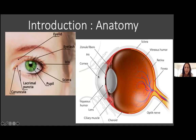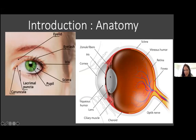Moving posteriorly, we've got the anterior chamber — a space filled with aqueous humor. Behind that we have the pigmented part, the iris, which controls the amount of light entering the eye. It extends posteriorly into the ciliary body, a muscular structure that suspends the zonules — fibers that suspend the lens behind the iris. The ciliary body extends posteriorly into the choroid, a vascular structure, over which we have the retina. The posterior chamber is filled with a jelly-like substance called vitreous, which liquefies and collapses as we age.